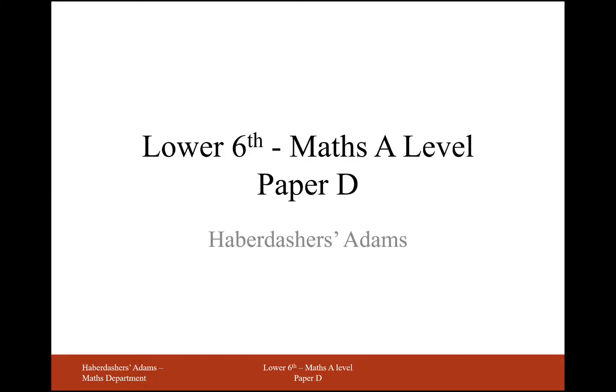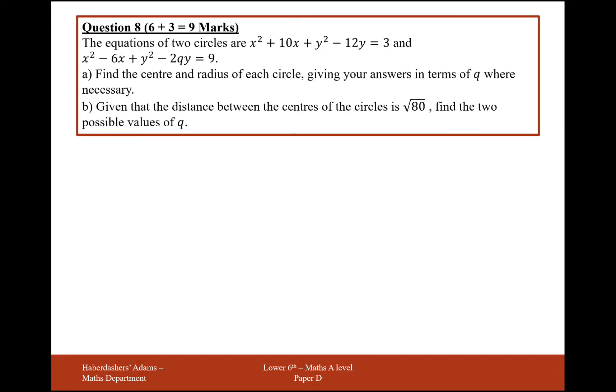Hello there and welcome to Lower Sixth Maths A-level practice paper D. Here we're working on question 8, a circles question. The equations of two circles are x² + 10x + y² - 12y = 3 and x² - 6x + y² - 2qy = 9. Find the center and radius of each circle, giving your answer in terms of q where necessary.